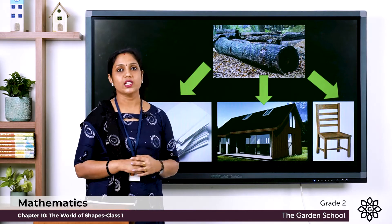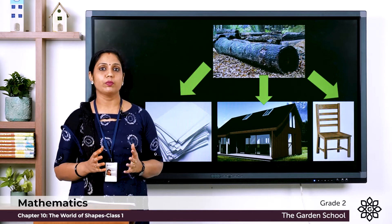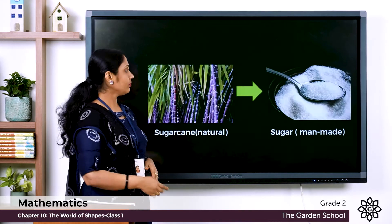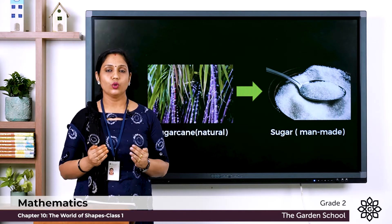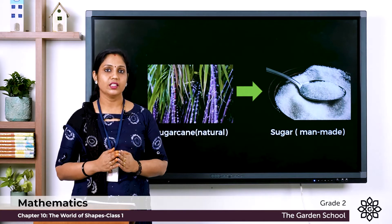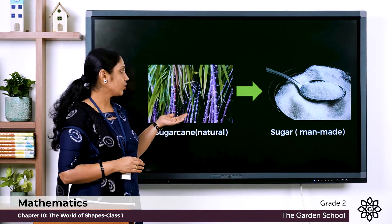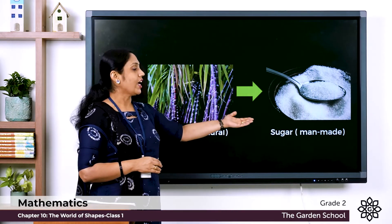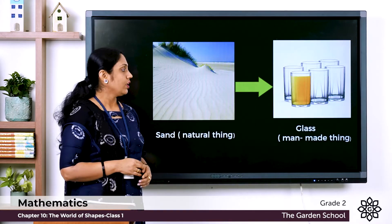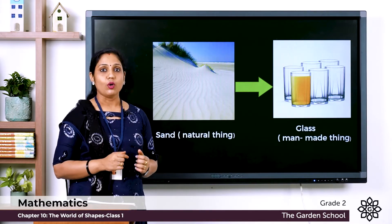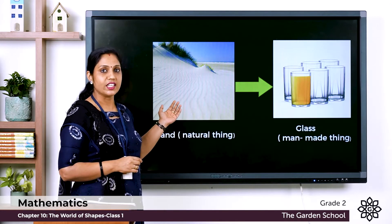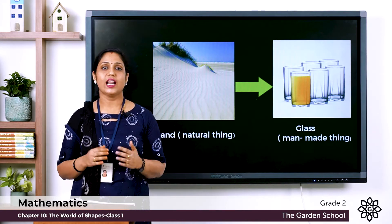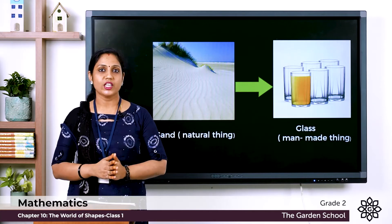It is very important that we preserve all these natural things, because only then will we be able to make other things. Sugar is made in factories but is obtained from sugarcane, which is a natural plant. So sugarcane is natural and sugar is man-made. Glass is made out of sand — sand is a natural thing and glass is a man-made thing.